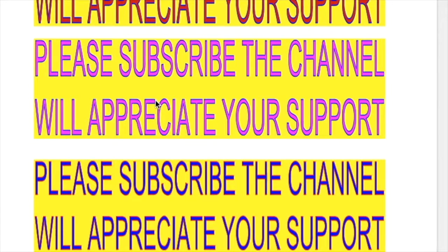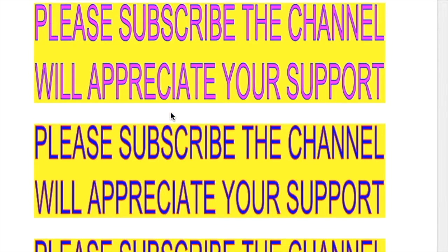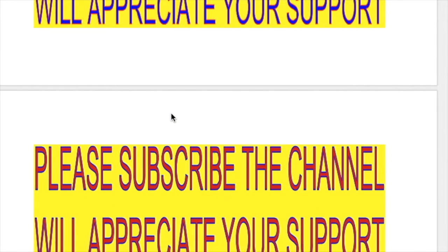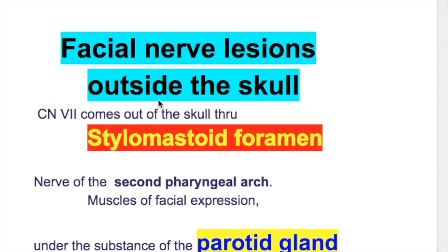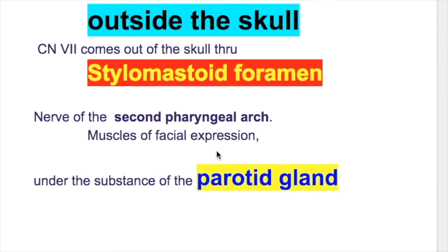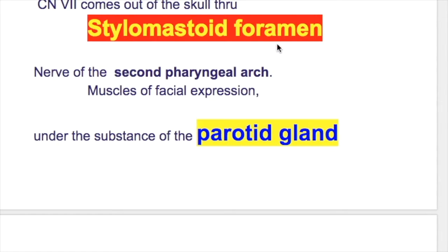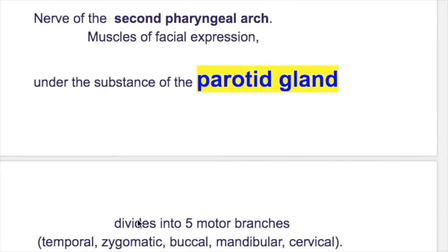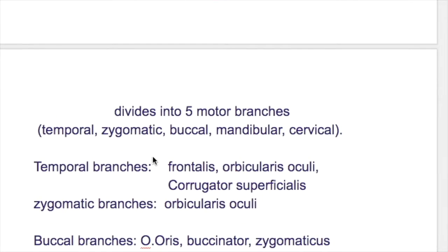We will discuss the facial nerve lesions which occur outside the skull and the effects of those lesions. The facial nerve, the seventh cranial nerve, comes out of the skull through the stylomastoid foramen. It is a nerve of the second pharyngeal arch and supplies muscles of facial expression. When it comes out of the stylomastoid foramen, under the substance of the parotid gland, it divides into five major branches.